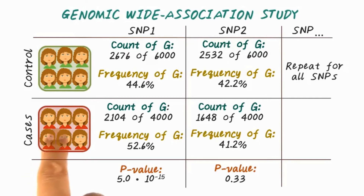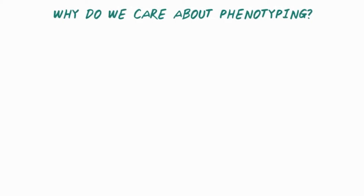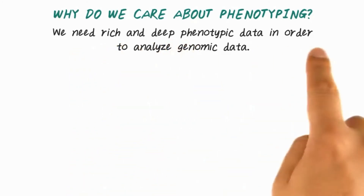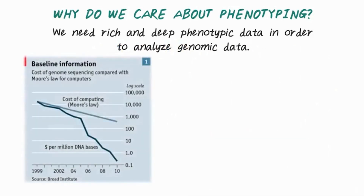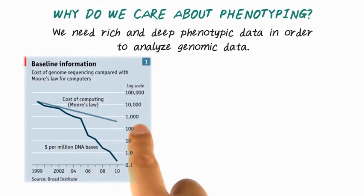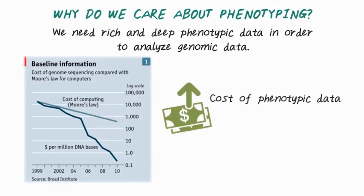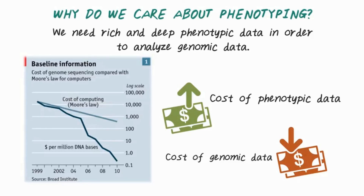To support GWAS study, we need high-quality phenotypes on the cases and controls in order to perform this calculation — that's why phenotyping algorithm is very important. As we have shown, we need phenotypic data in order to analyze genomic data. Many people argue that we need rich and deep phenotypic data to analyze genomic data. Especially as sequencing technology improves, the cost of generating genomic data is dropping fast, while the cost of computing cannot keep up. This means we'll have more and more genomic data in the near future. However, due to the complexity of electronic health records, the cost of generating high-quality phenotypic data is actually increasing. That is why we really need to invent better phenotyping algorithms to reduce the cost of acquiring high-quality phenotypic data and to support genomic studies.